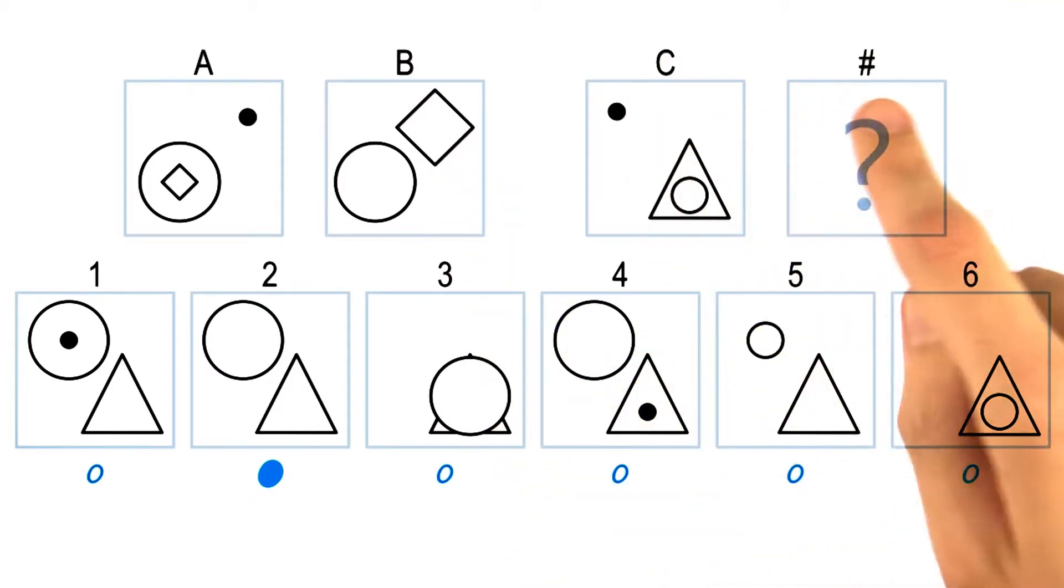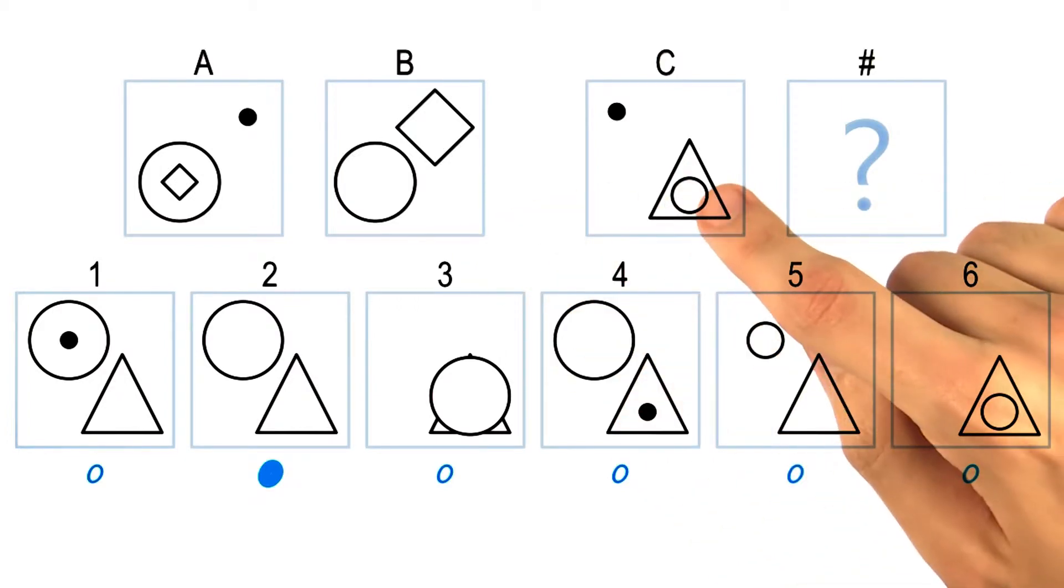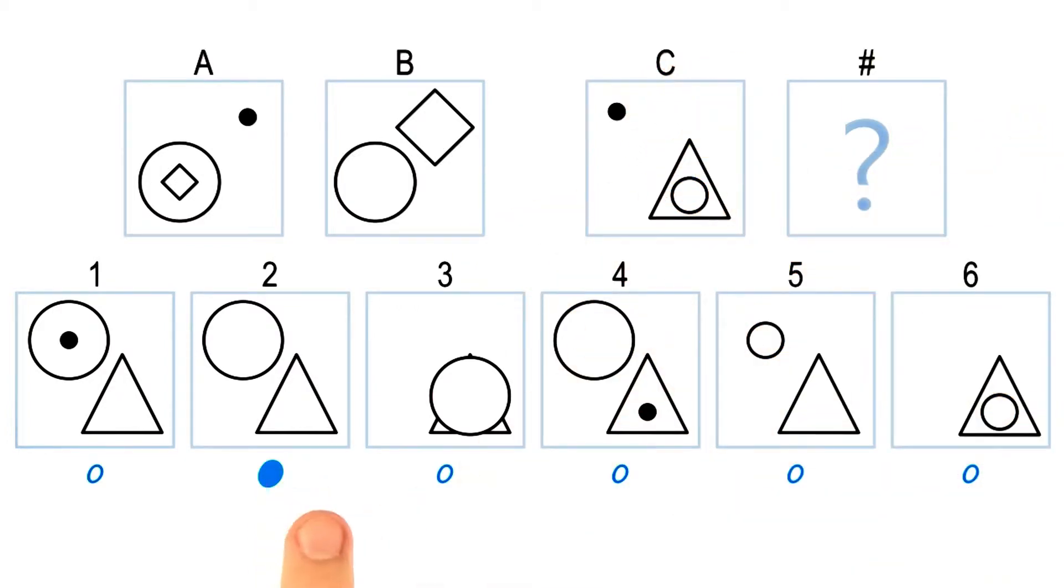So I said that the dot would still disappear, even though it's on the other side of the frame. And the circle that was inside the triangle will move out and grow. So I said the answer was two.